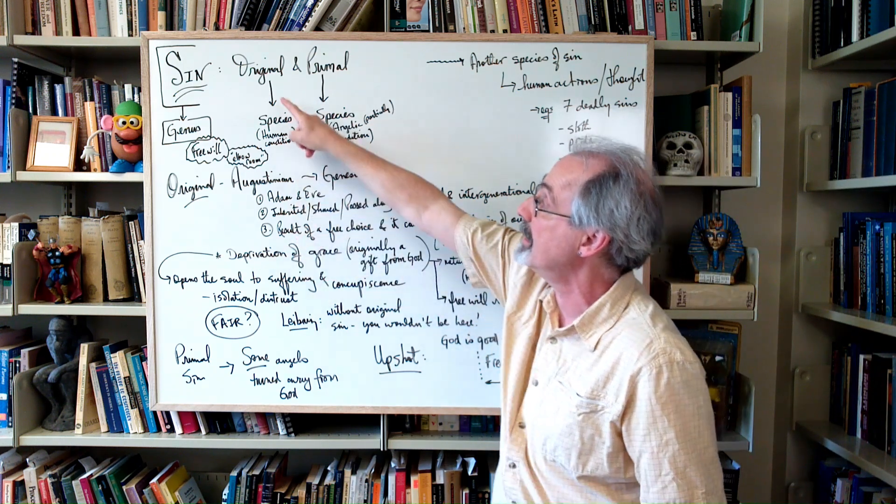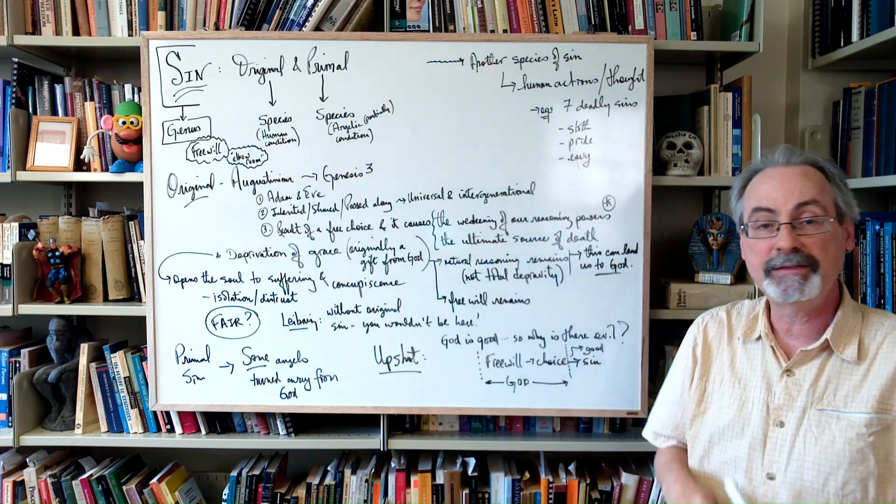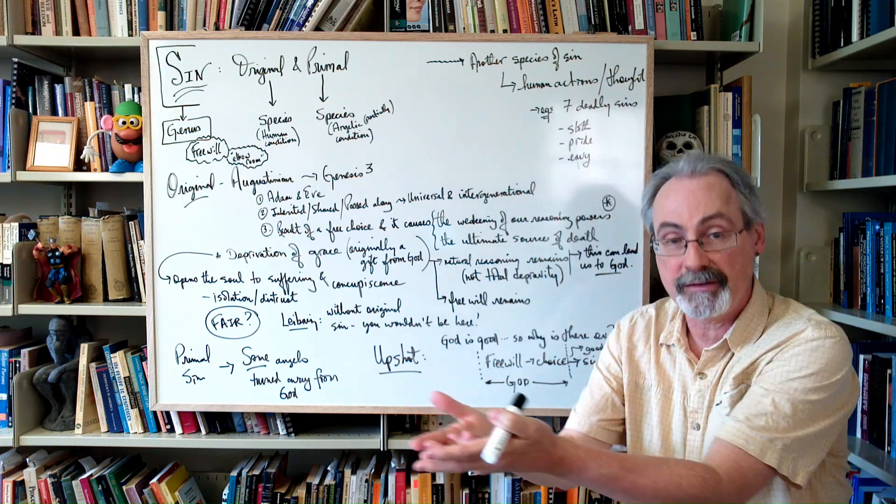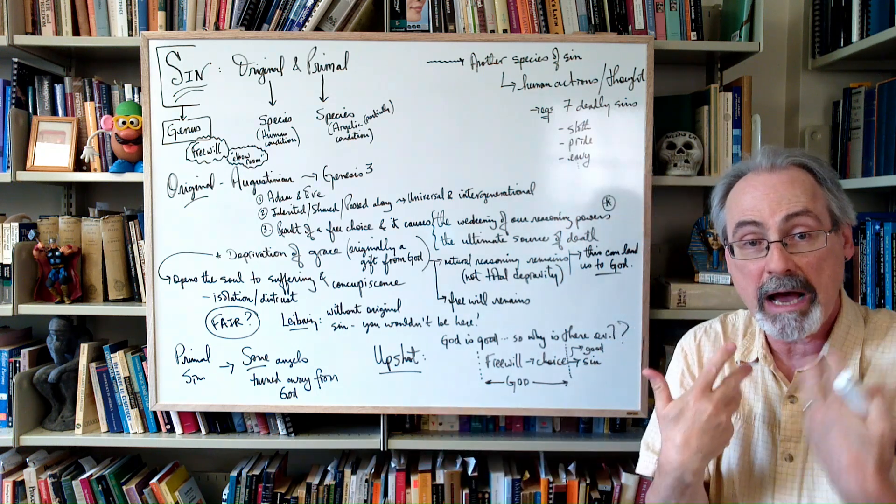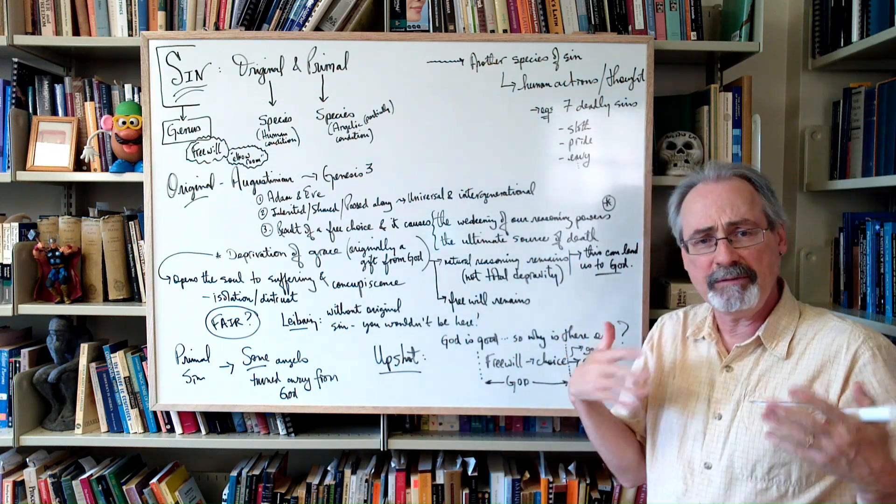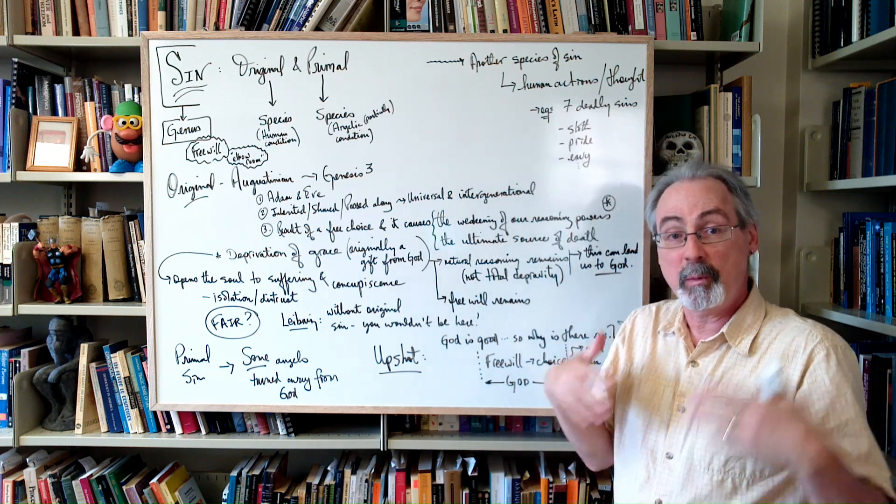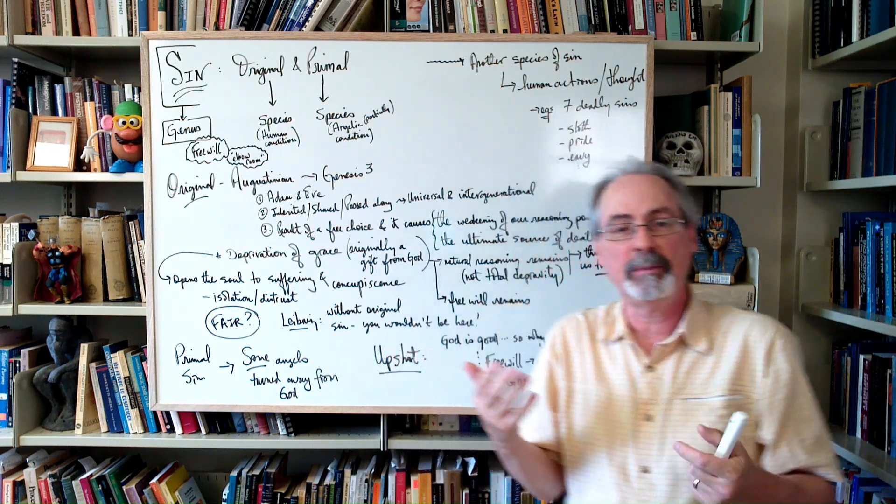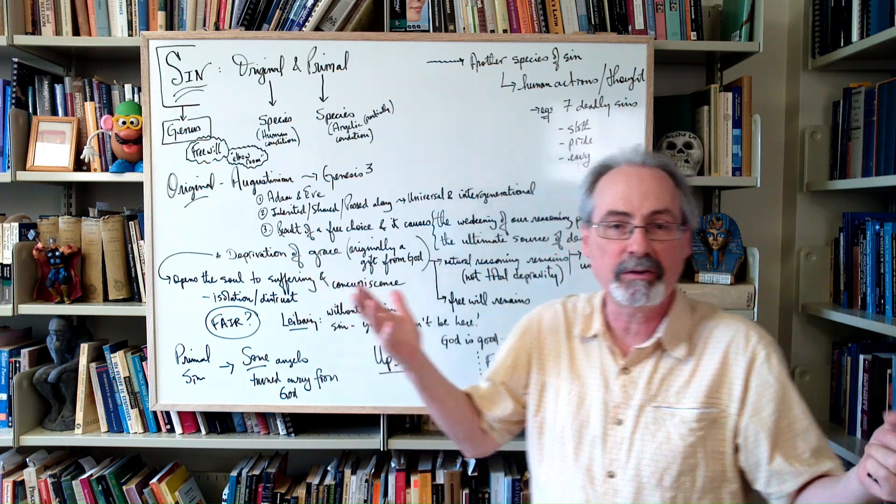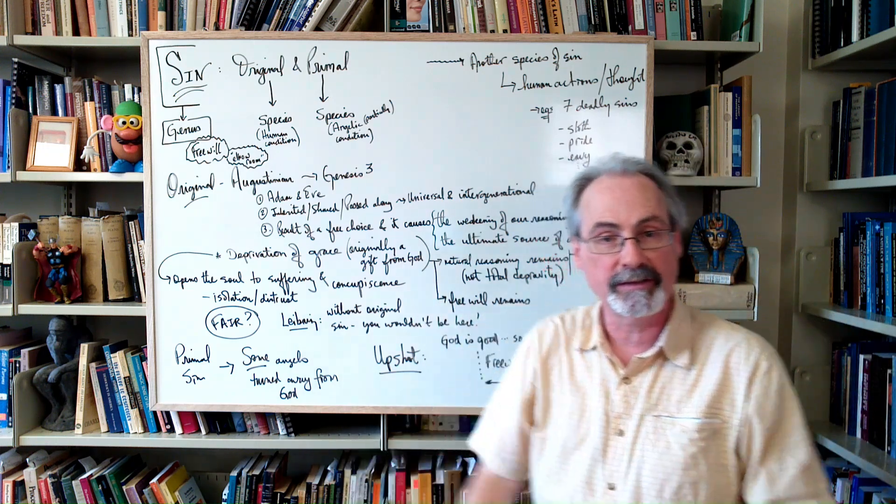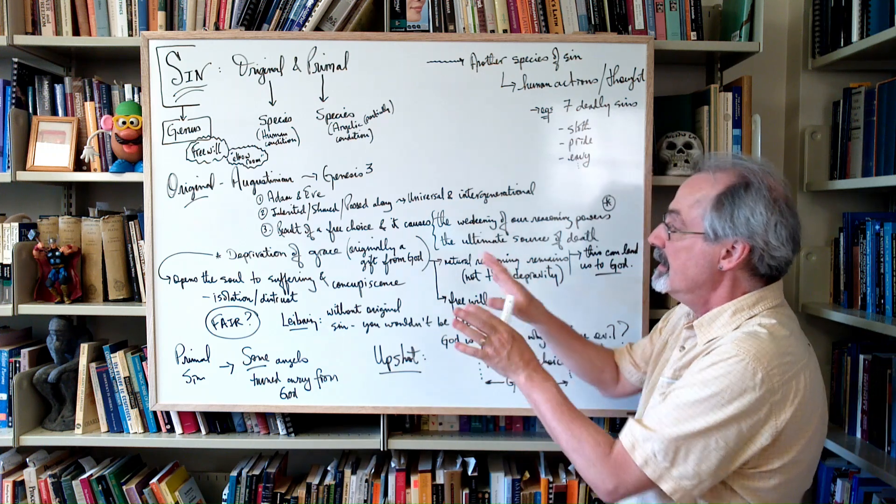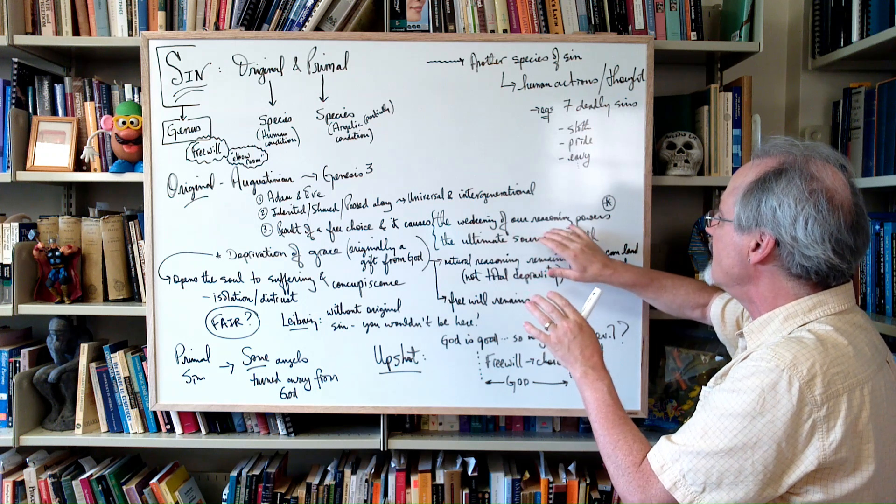And ultimately, remember, it is the result of a free choice, and it has effects. So original sin causes things to happen to us. It's a property of us and it causes something in us. You can think of it kind of like a sickness. When you're physically sick, this is an analogy to original sin. If you are born physically sick or something, it's going to damage some of your abilities. But we've got to be careful about what these abilities are. So what does it do? Well, it weakens our reasoning powers.